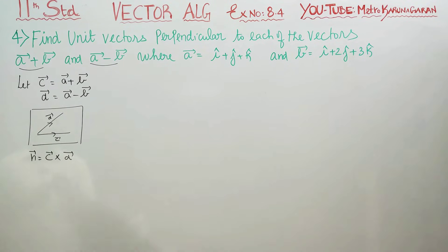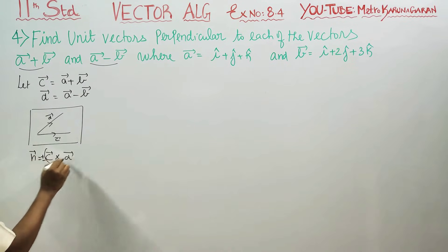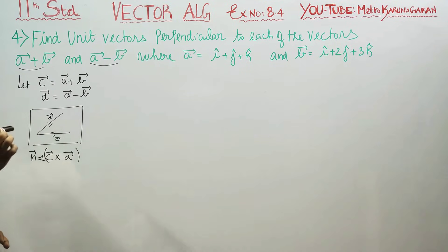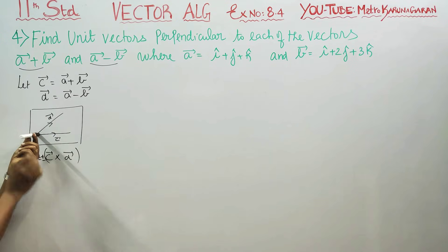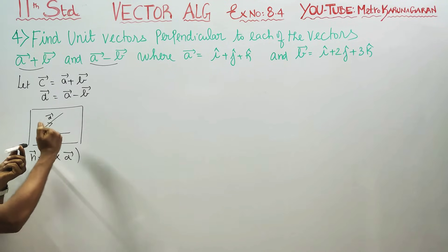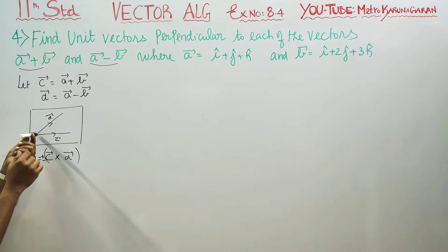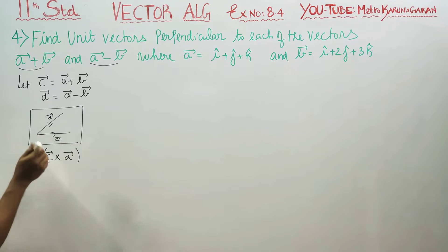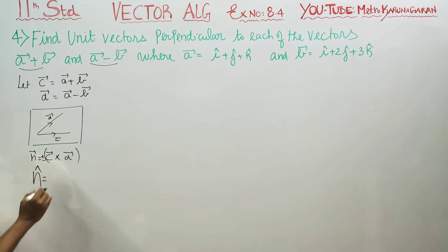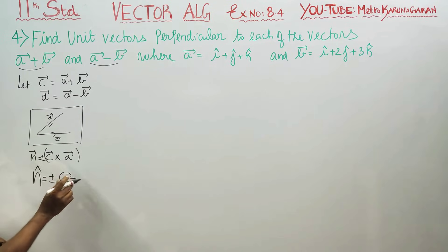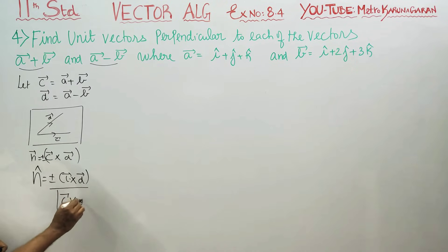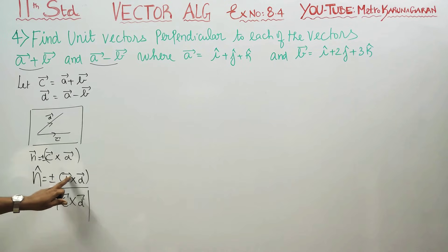The perpendicular vector n can point in the plus or minus direction. So c cross d gives a vector perpendicular to the plane containing c and d. To get the unit vector, we divide c cross d by its magnitude. So the formula is: n-hat equals plus or minus c cross d divided by the magnitude of c cross d.